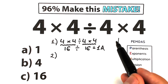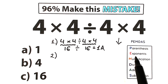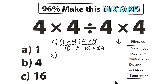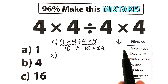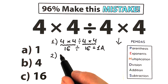PAMDAS works from top to bottom. The highest priority is parentheses, then we evaluate exponents, then multiplication and division as a group, and the last step is addition and subtraction as a group. So going through the steps: parentheses, exponents, multiplication, division, addition, subtraction.